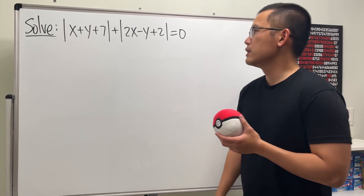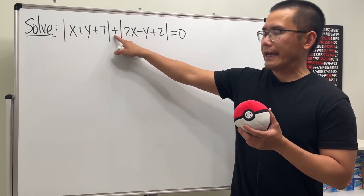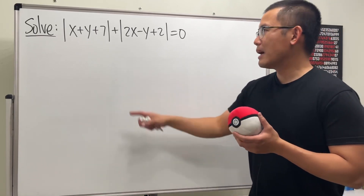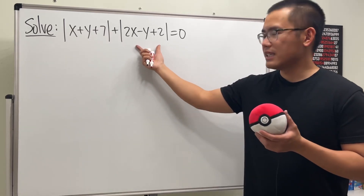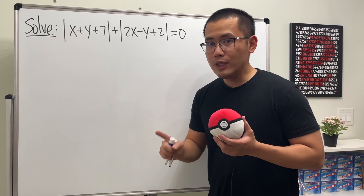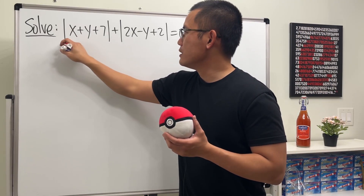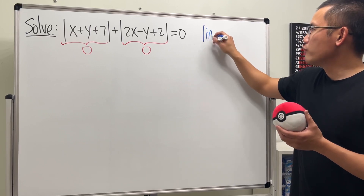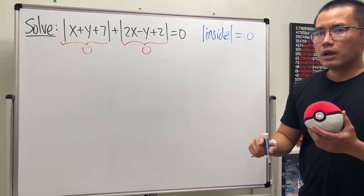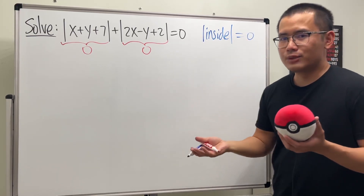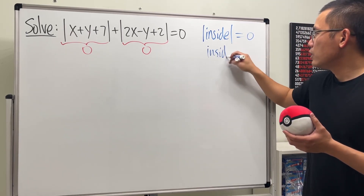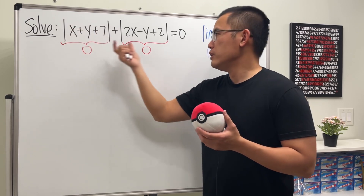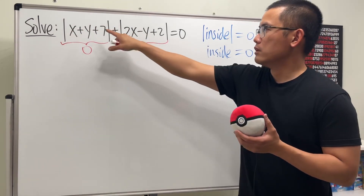Okay, here is the key: if the middle were a minus, it would be crazy and there would be so many answers. But thankfully this is a plus, so we have the first absolute value plus the second absolute value equal to zero. The only way this can happen is that each absolute value must be zero. Because an absolute value can never be negative, the only way their sum equals zero is if they are both individually zero.